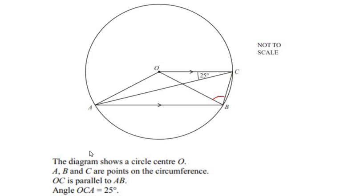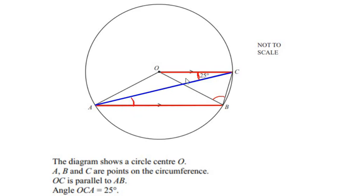Let us start with the given information: OC is parallel to the line AB. The line AC is acting as a transversal which cuts the two parallel lines at point A and at point C. Because of the alternating angles of the parallel lines, angle OCA equals angle OAC, so angle A is 25 degrees, the same as angle C.